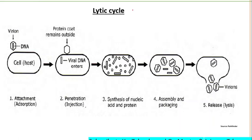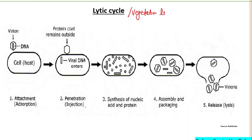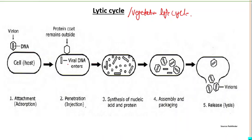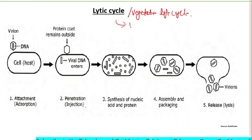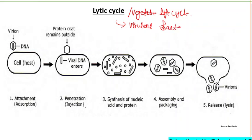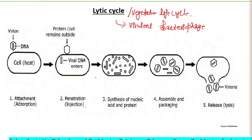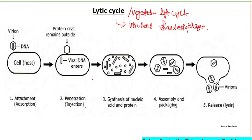The lytic cycle is also known as the vegetative cycle. A bacterial virus exhibiting the lytic cycle is known as a virulent bacteriophage, because it causes death and destruction of the host cell. T-even phages are examples of virulent bacteriophages.